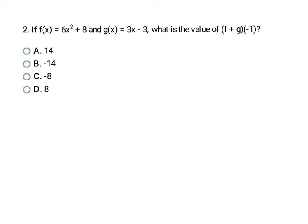Here they're telling us that function f is 6x² + 8 and function g is 3x − 3. As long as you understand what the symbols mean, this is a fairly easy problem. It's asking you to add these two functions and then evaluate that sum at negative 1. There are two ways to do this: you could evaluate f at −1 and g at −1 and then add those answers, or you could add the functions first and then evaluate. Either way gives the correct answer.